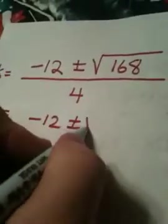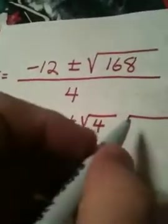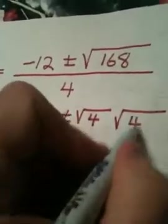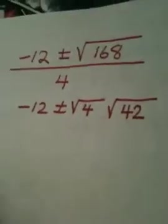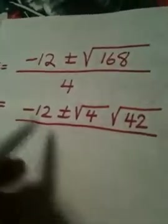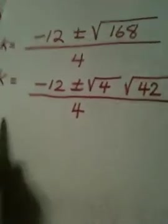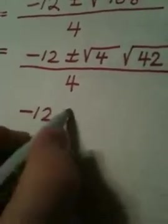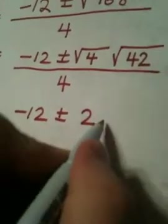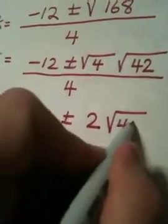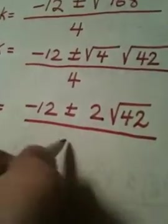So, the square root of 168 becomes the square root of 4 times the square root of 42. See, 4 times 42 gives me the 168. But, the reason that that's so good is because the square root of 4 is a perfect square. So, as I continue, I get negative 12 plus or minus the square root of 4 becomes 2. The square root of 42 remains and this is all over 4.